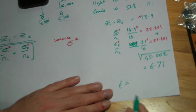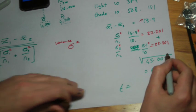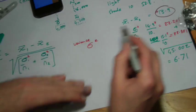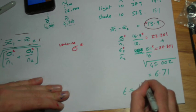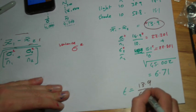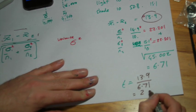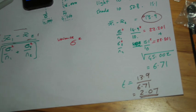Our T value: the 45.002 is the entire bottom portion of the formula, and the 13.9 is the top. So we need 13.9 divided by 6.71, which gives an answer of 2.07. That's what's called our T value. In the next video, I'm going to talk about what that value actually means.